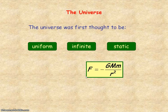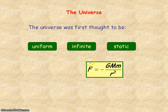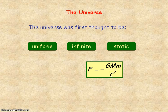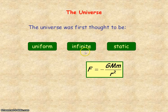From Newton's law of gravitation, for a static universe, the overall force acting on all the objects inside the universe must be zero. So for F to equal zero, then R must be approaching infinity. So a static universe would be consistent with an infinite universe.